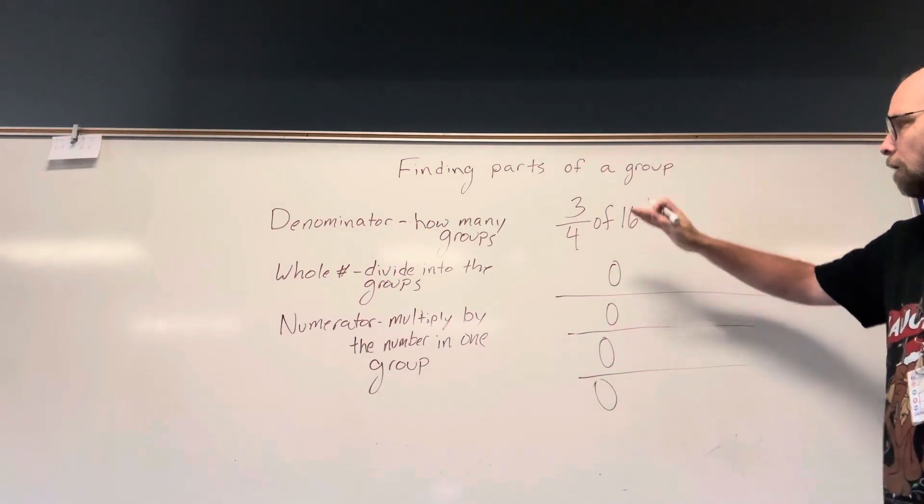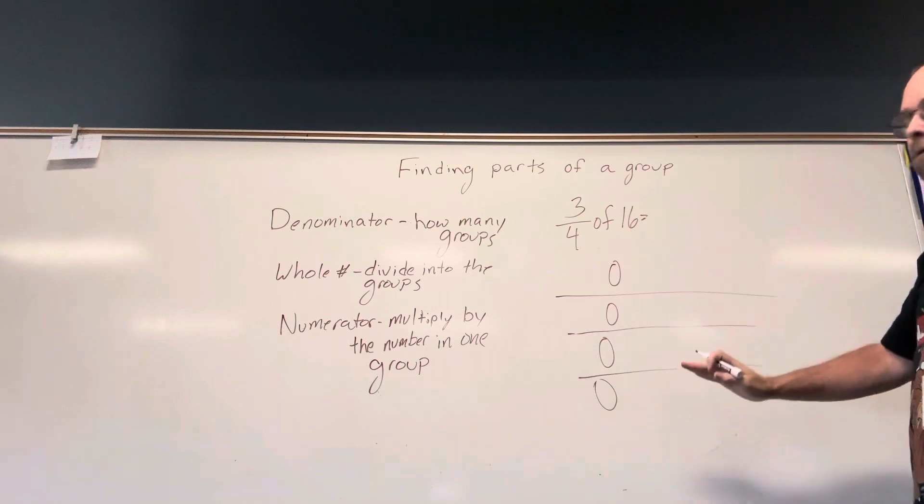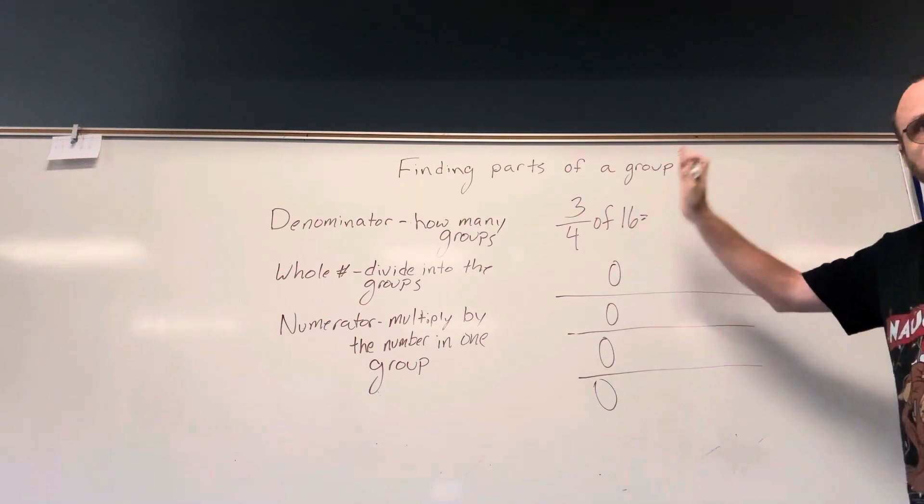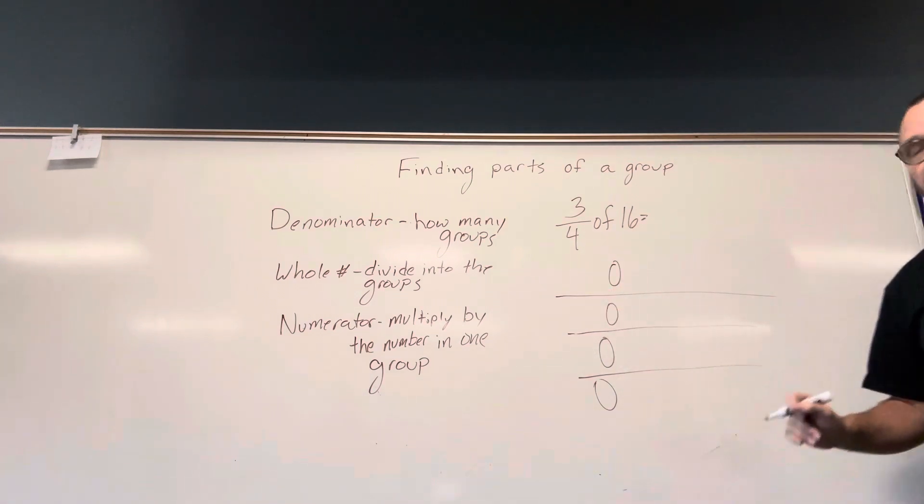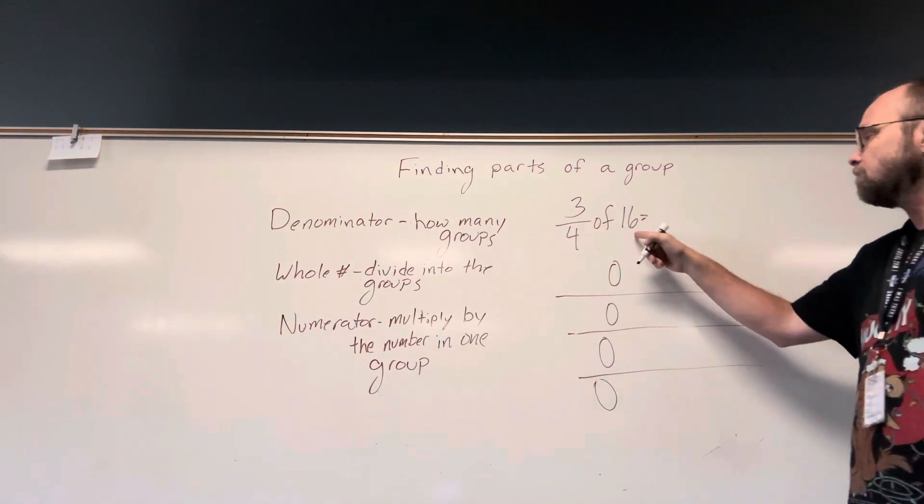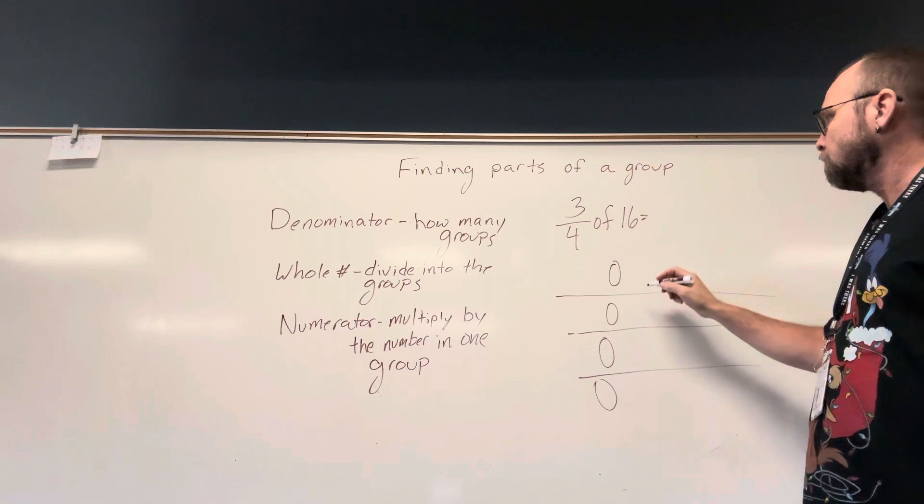Now, you need to know columns run up and down. Columns are vertical. Rows are horizontal, because that's going to come up today as well. So we have to divide these 16 among these four groups.